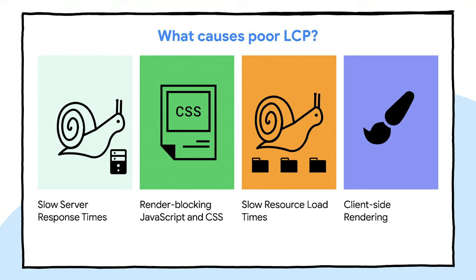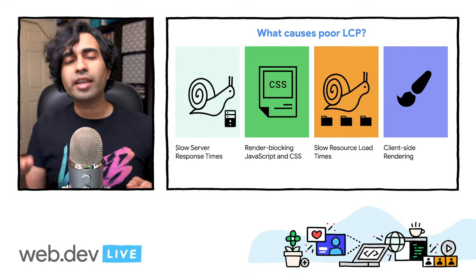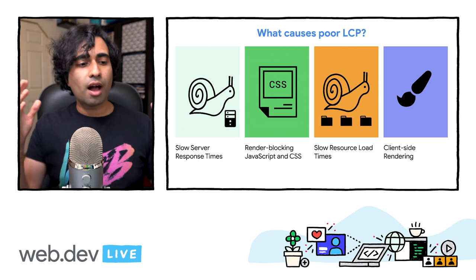What causes a poor LCP? Slow server response times are a big one — that could be backend infrastructure, unoptimized database queries, or API responses taking too long. It could also be render-blocking JavaScript and CSS. Slow resource load times, like unoptimized images, are another factor. And there's client-side rendering: requests for assets like hero images can be hidden behind JavaScript fetches, requiring the browser to fetch, parse, and process JavaScript before it can even fetch the image.